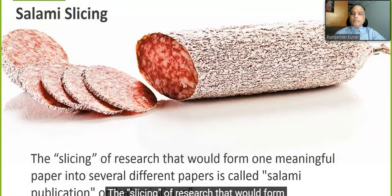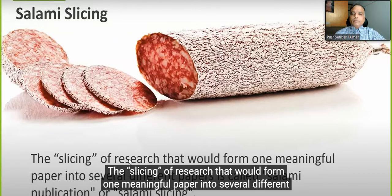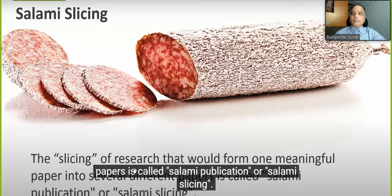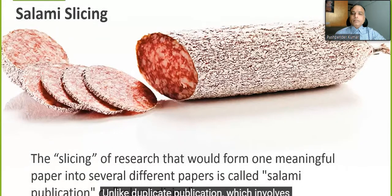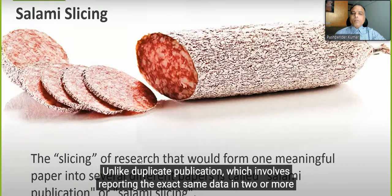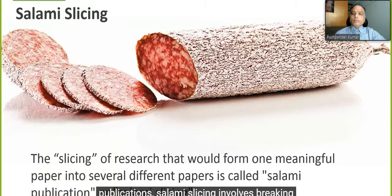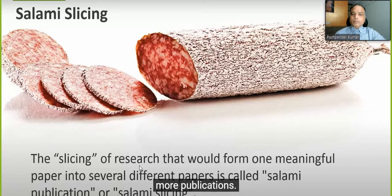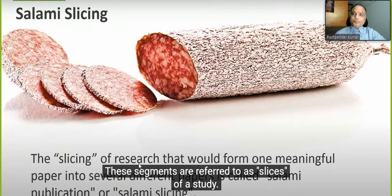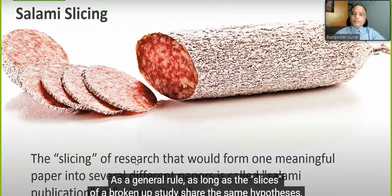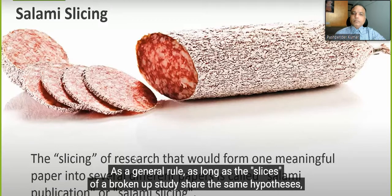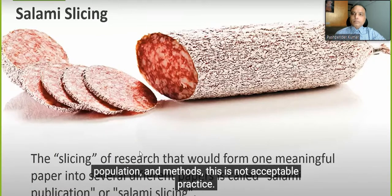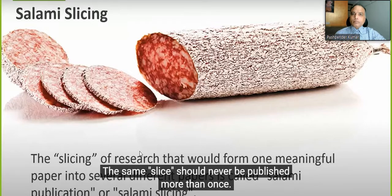Articles submitted for publication must be original and must not have been submitted to any other publication at the time of submission. Authors must disclose any details of related papers, similar papers in press, and translations. The slicing of research that would form one meaningful paper into several different papers is called salami publication or salami slicing. Unlike duplicate publication — which involves reporting the exact same data in two or more publications — salami slicing involves breaking up a large study into two or more publications, referred to as slices.